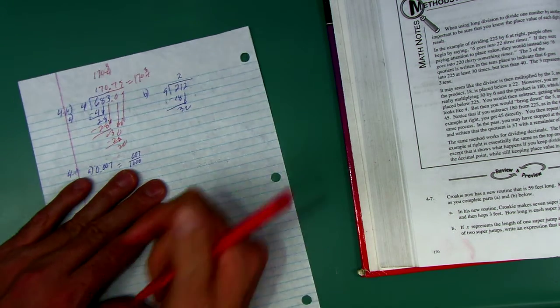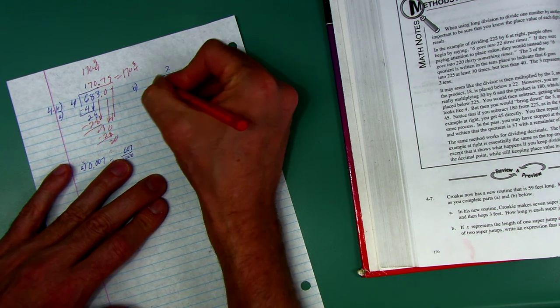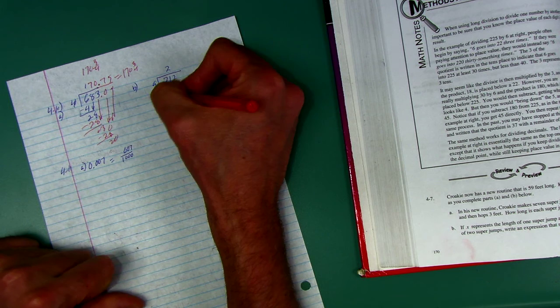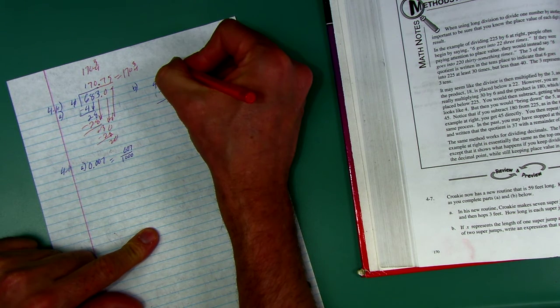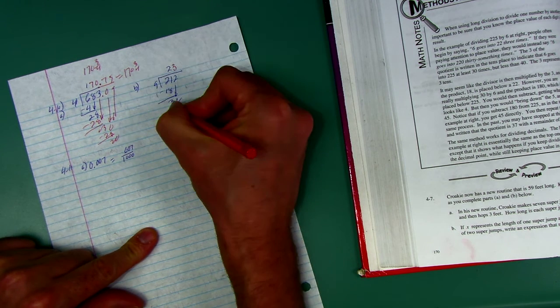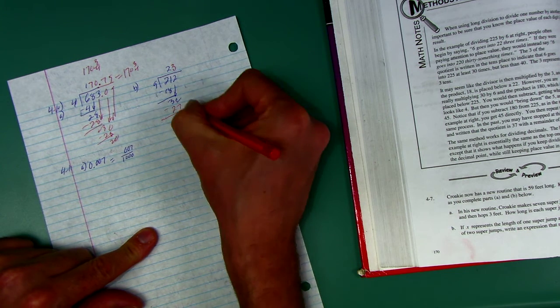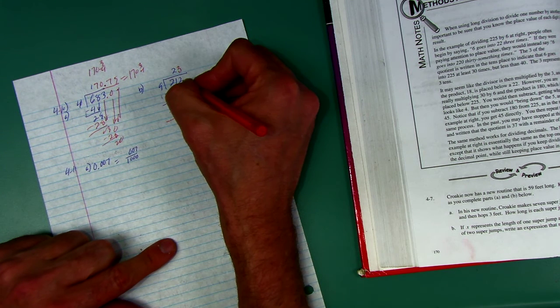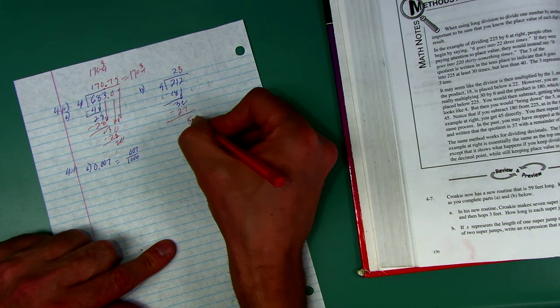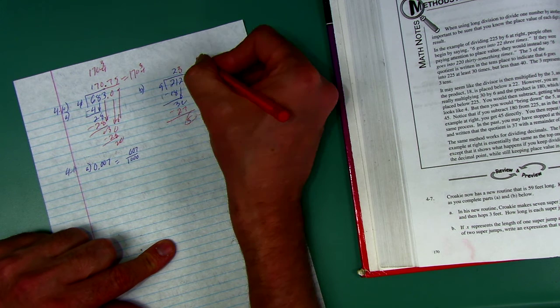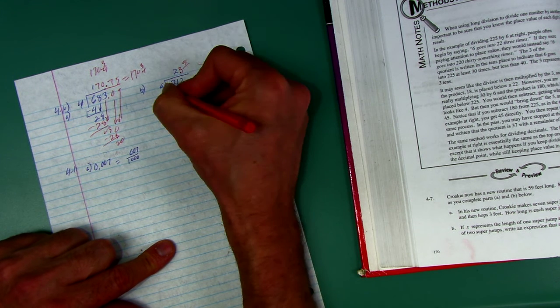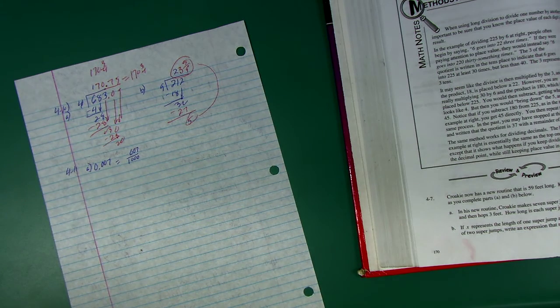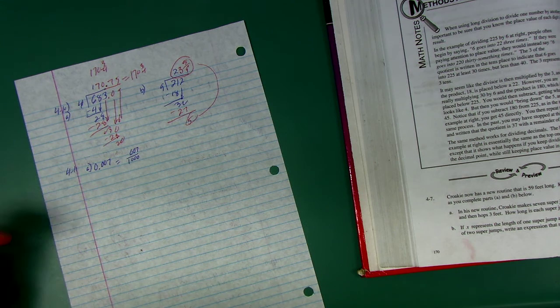Now I go here, now 9 went into 21 twice, and that's 18. Now 9 goes into 32 three times, that's 27. Now on this one, because I know that 9 is a multiple of 3, I'm not going to add a decimal, because I'm going to get a repeating decimal when I do that. I'm just going to write this as a fraction, 23 remainder 5, 23 and 5 ninths. And like I say, if you divide that, you're going to get a repeating decimal.